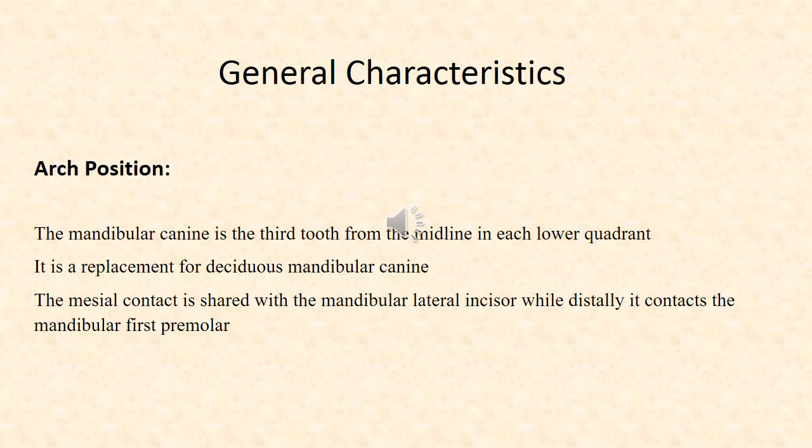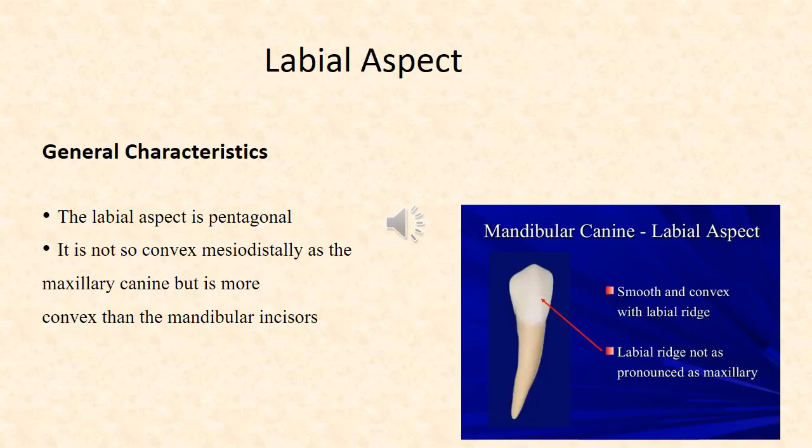General Characteristics: The mandibular canine is the third tooth from the midline in each lower quadrant. It is a replacement for the deciduous mandibular canine. It shares mesial contact with the mandibular lateral incisor and distal contact with the mandibular first premolar. The labial aspect of the mandibular canine is pentagonal in shape.